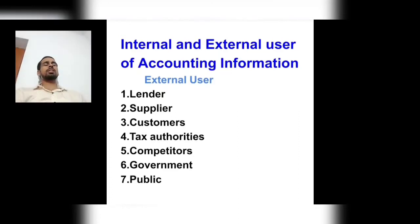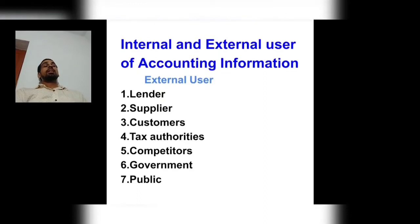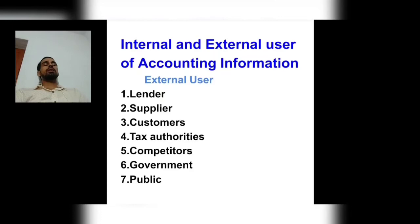The last external user is the public. The public also views accounting information because they may want to invest in future or purchase something. Public are our future purchasers and future customers. For example, if a bank publishes its quarterly balance sheet in a magazine or newspaper, general people look at it, conclude the net worth of that bank, and decide whether to invest their money in that bank or organization.